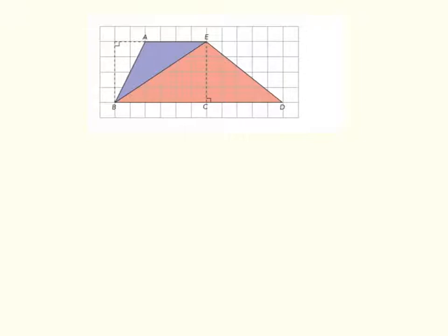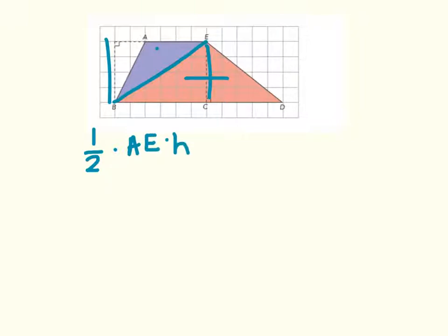Let's begin looking at trapezoids and derive the formula for finding the area of a trapezoid. This figure, ABDE, is a trapezoid with a base BD and a height of EC. Line AE is parallel to line BD. A diagonal line labeled BE divides our trapezoid into two triangles. Both triangles have the same height. The area of our trapezoid would be found by finding the area of the purple triangle and the area of this pink triangle. So one half of line AE times the height, plus one half of line BD times the height, equals the area of our trapezoid.